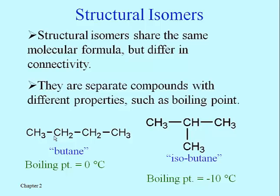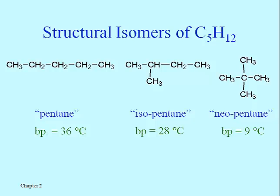It turns out the more carbons you have in an alkane, the more possibilities there are for isomers. This next slide shows the situation for pentane — five carbons and twelve hydrogens. There are three different ways to connect all those atoms so that the octet rule is satisfied. Pentane normally refers to the case where carbons are all in sequence, isopentane has one of those five carbons branching off the middle of the chain, and neopentane — the most recently discovered — gets its name from the prefix 'neo,' meaning new.